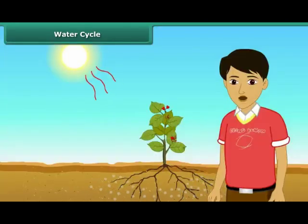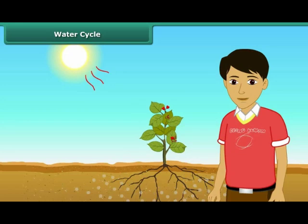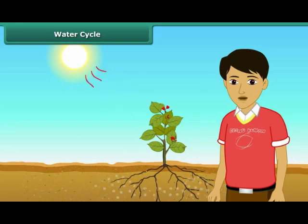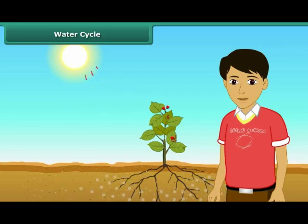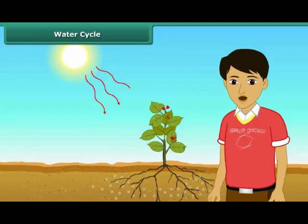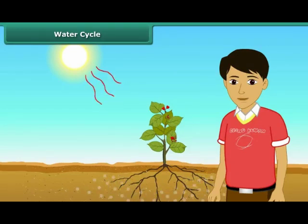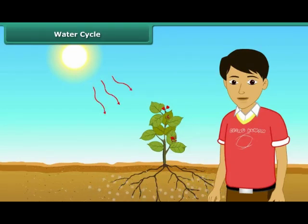Plants absorb water from the soil. They use a part of this water to prepare their food and release the excess water into the air as water vapor. This process is called transpiration.